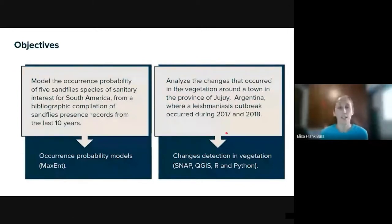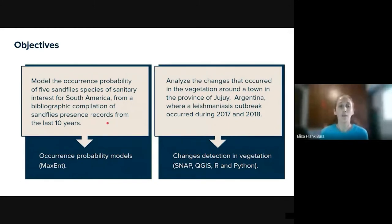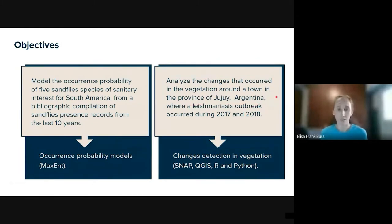With the idea to study leishmaniasis, we propose two objectives. The first is to model the occurrence probability of five sandfly species of sanitary interest for South America, from a bibliographic compilation of sandfly presence records from the last 10 years, using MaxEnt. The second objective was to analyze the changes in vegetation around the town in the province of Jujuy, Argentina, where a leishmaniasis outbreak occurred during 2017 and 2018, exploring different software and programming languages.